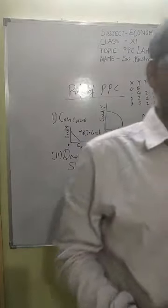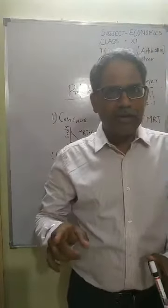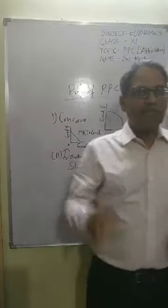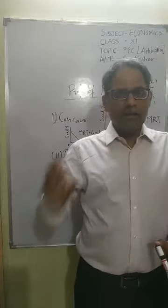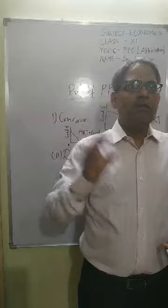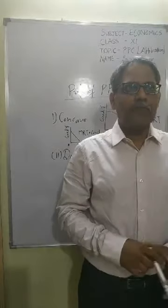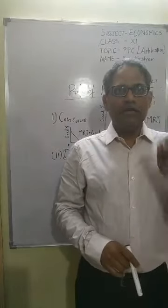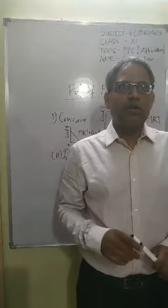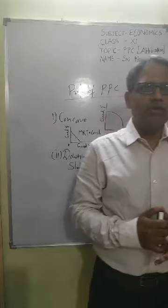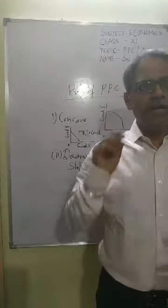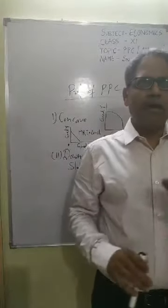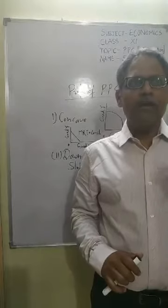This is also a 1-mark MCQ question. When the rate of change in MRT is constant, the options are: PPC concave, PPC convex, PPC straight line, or none of the above. The answer is: PPC is a straight line when MRT is constant. In real life situations, we show PPC as concave, and the reason is increase in MRT — Marginal Rate of Transformation.